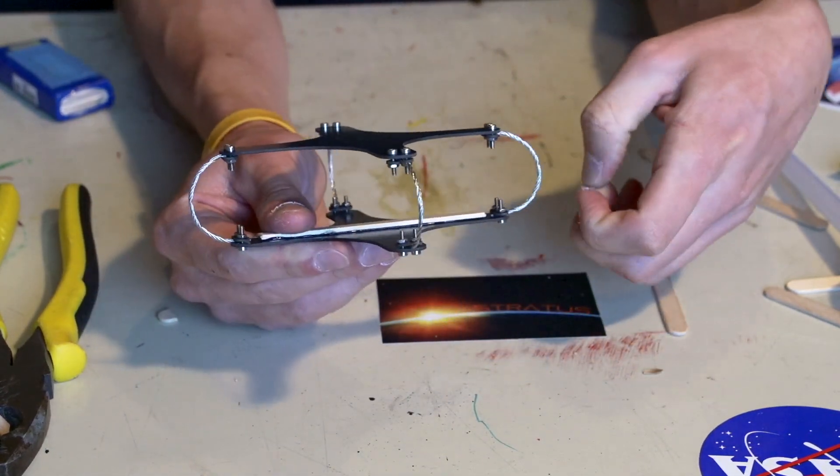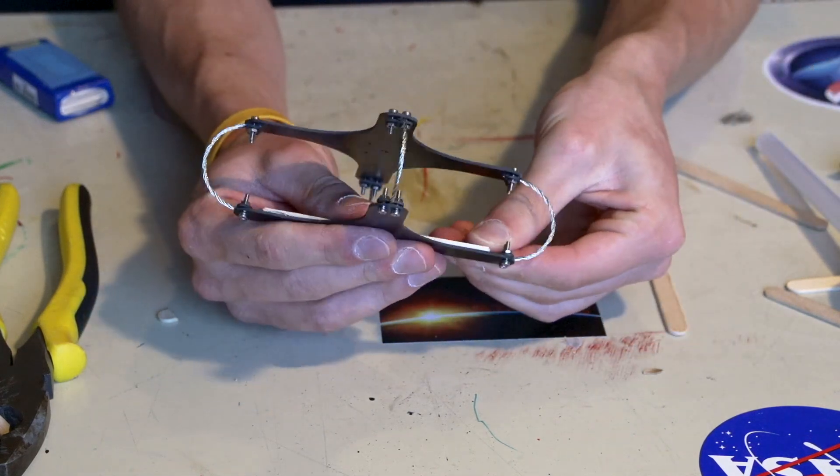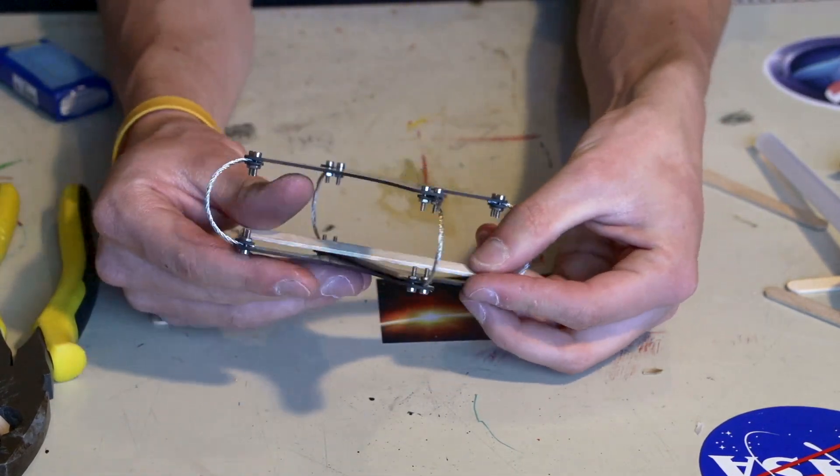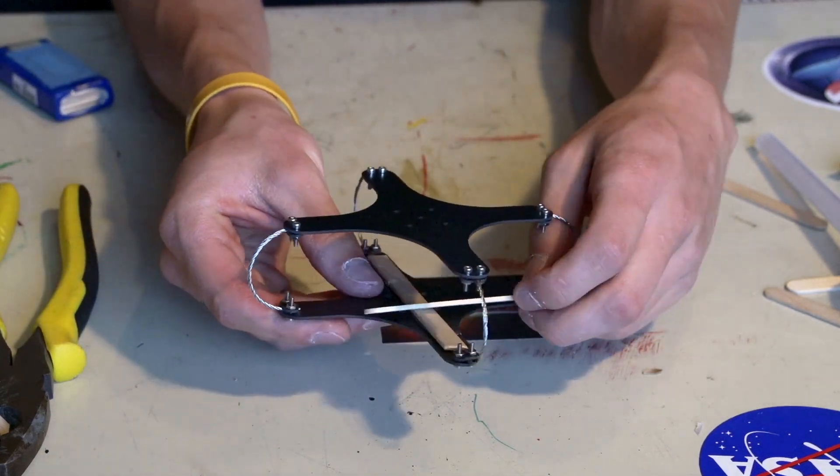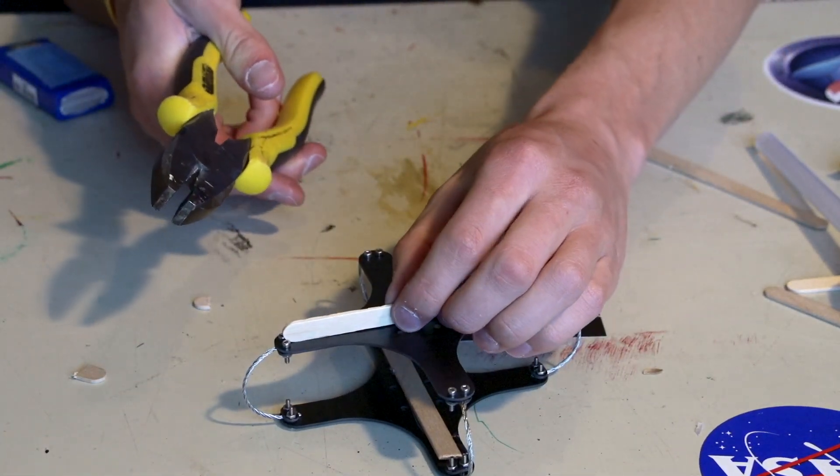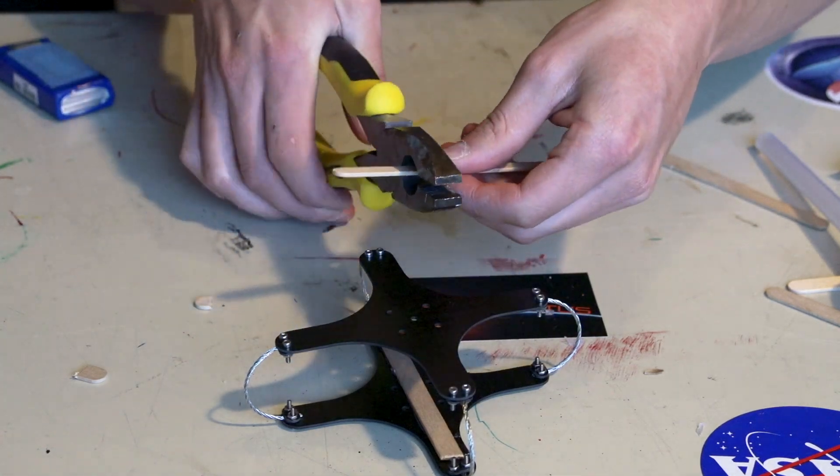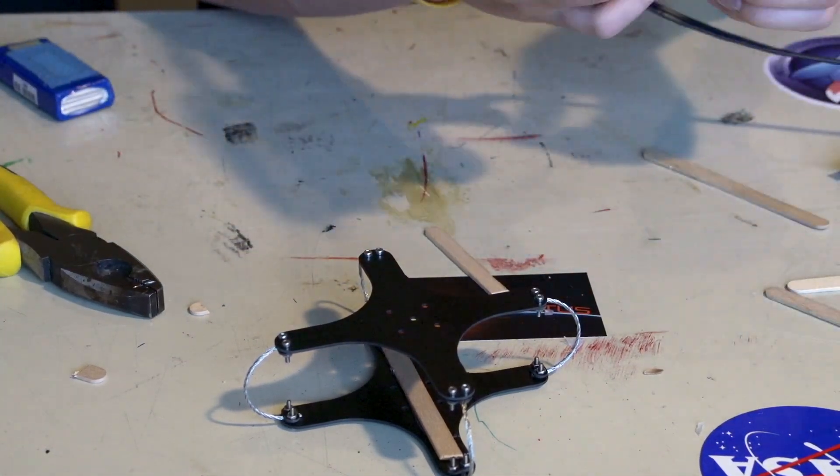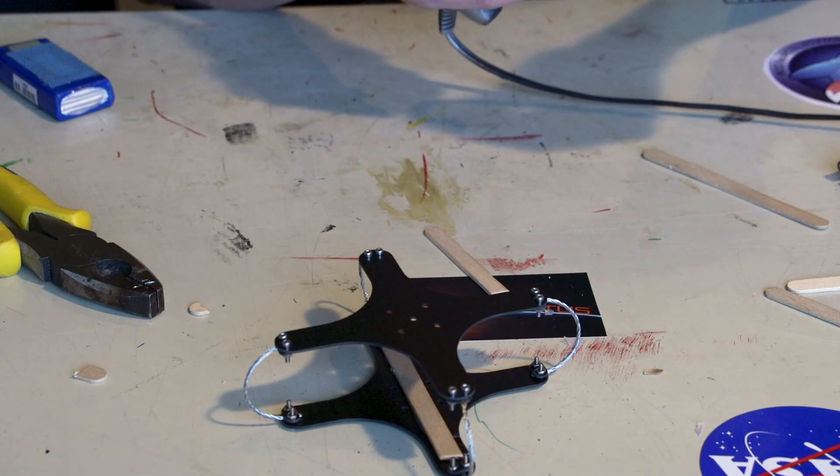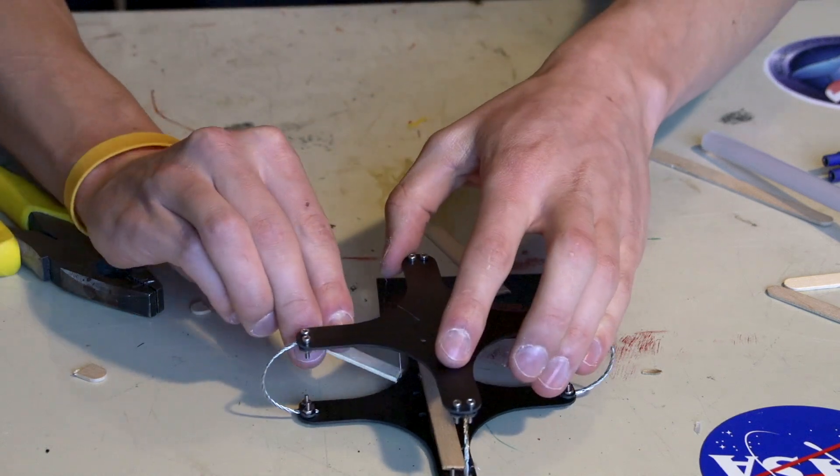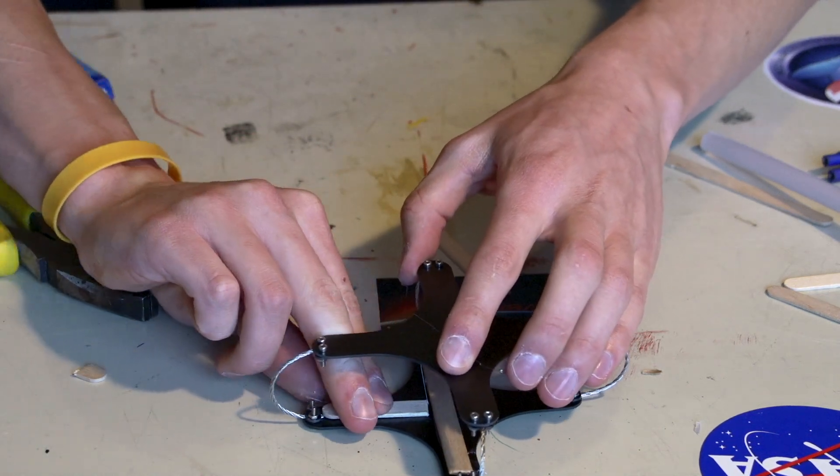And now obviously with the next popsicle stick, it can't bend over this one that's already there, so you're going to have to cut it down. But that's not a problem. Even when it is cut down and it's not actually running the whole length of the covered piece, it'll still have the same dampening effect. So just like that.